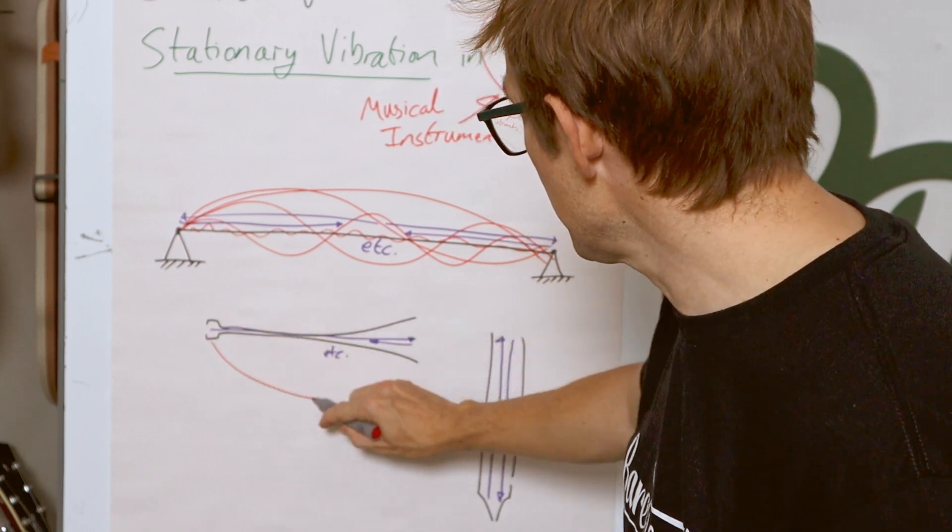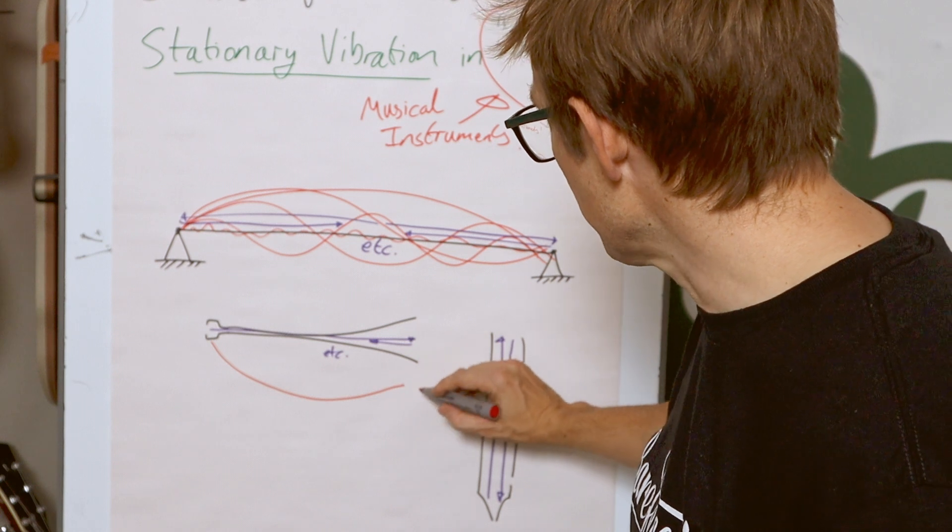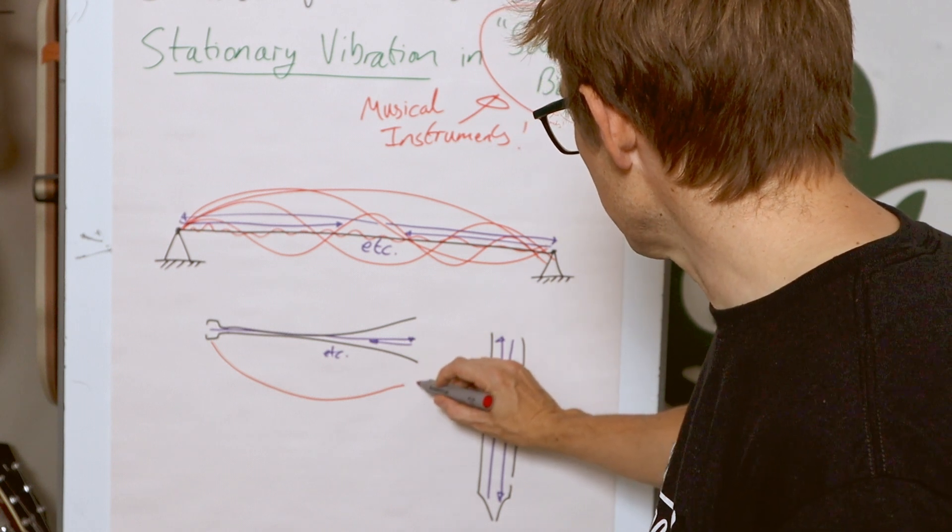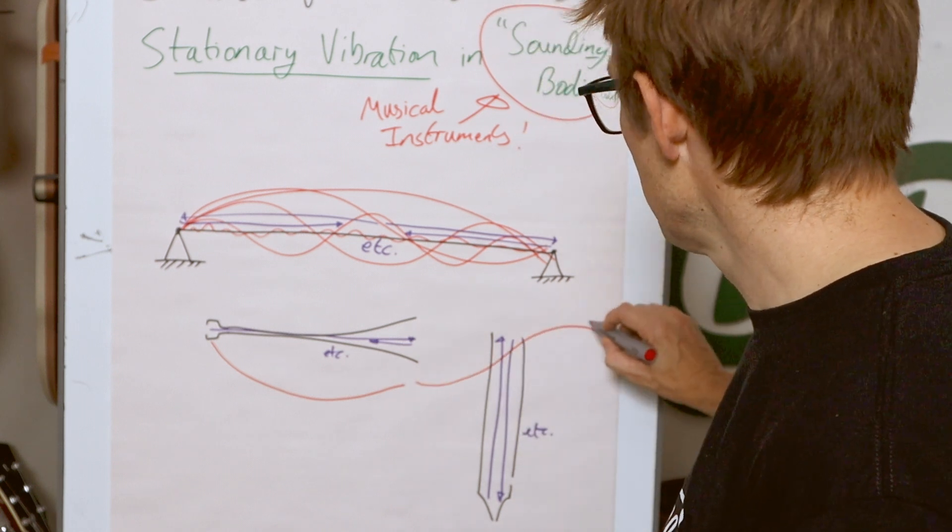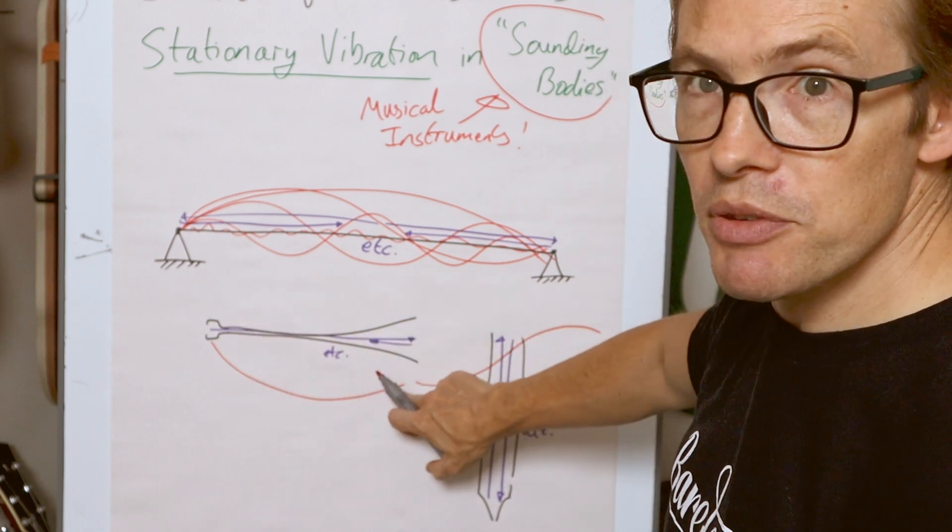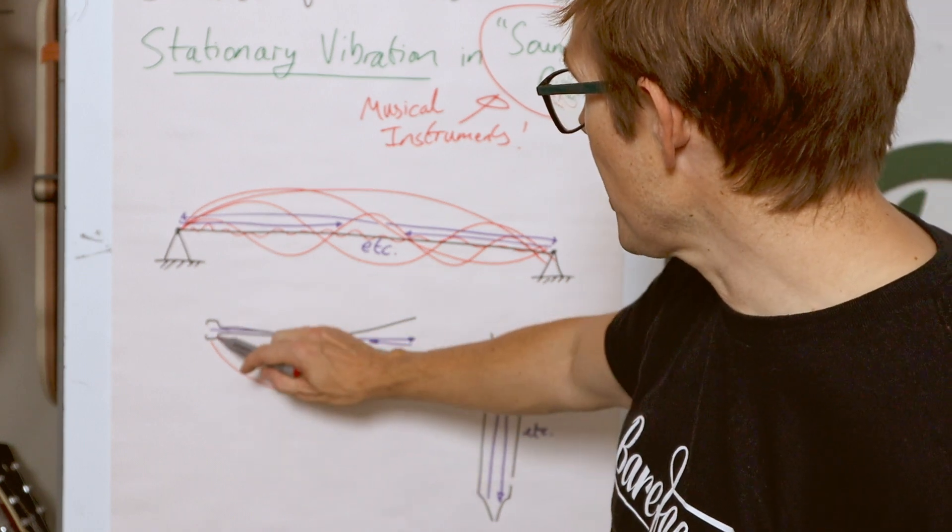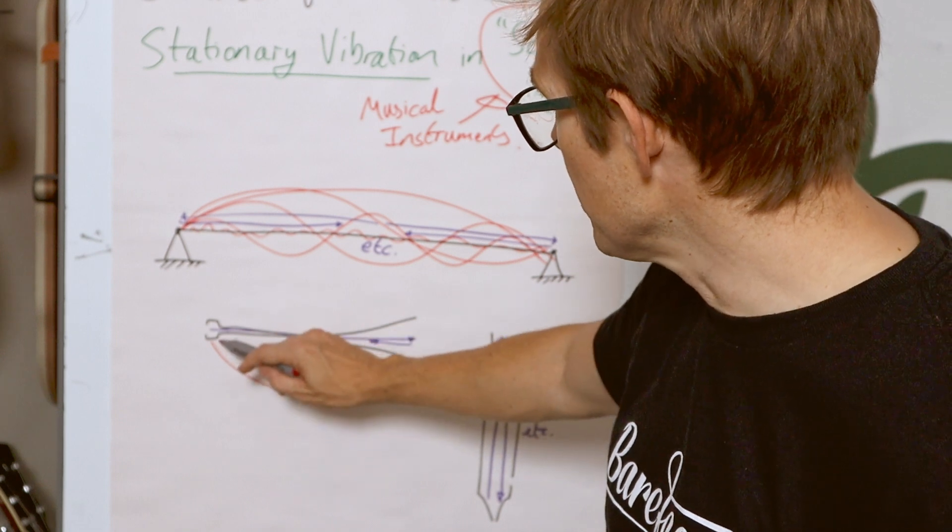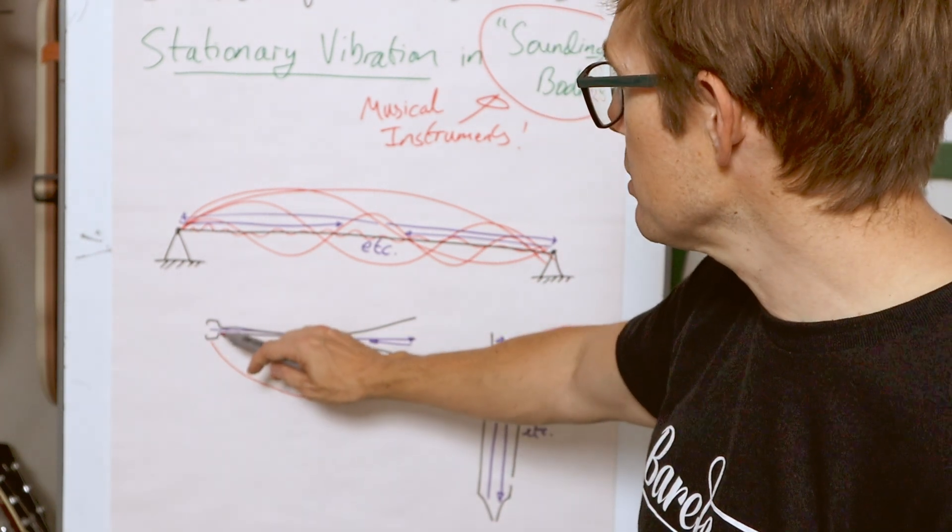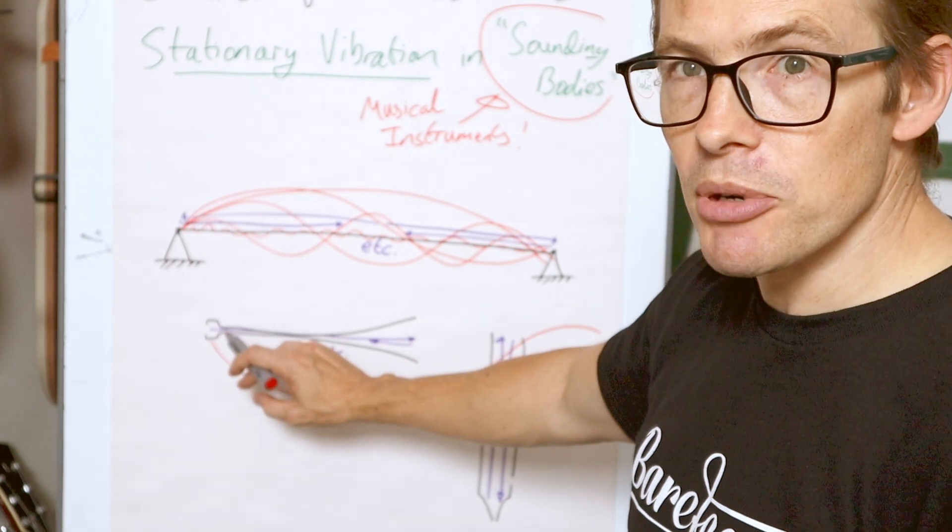That should be a maximum and then this would continue. You end up with a quarter of the wavelength fitting there as the first harmonic. Then if that is an open end I don't think you then get the second harmonic.